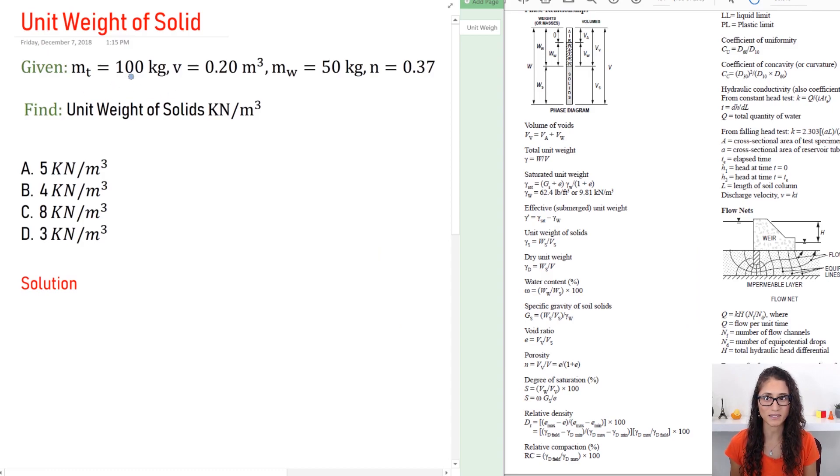Okay, so we're given the total mass is 100 kilograms, the total volume 0.20 cubic meters, the mass of the water is 50 kilograms, and porosity n is 0.37, and we need to find the unit weight of the solids in kilonewtons per cubic meter.